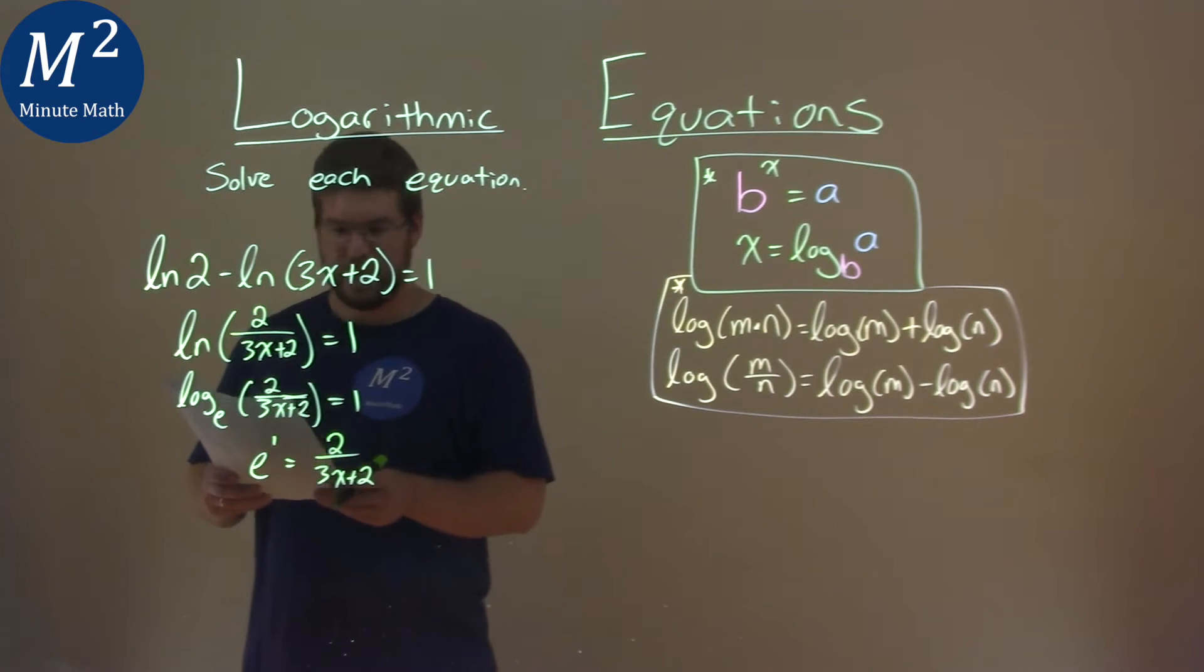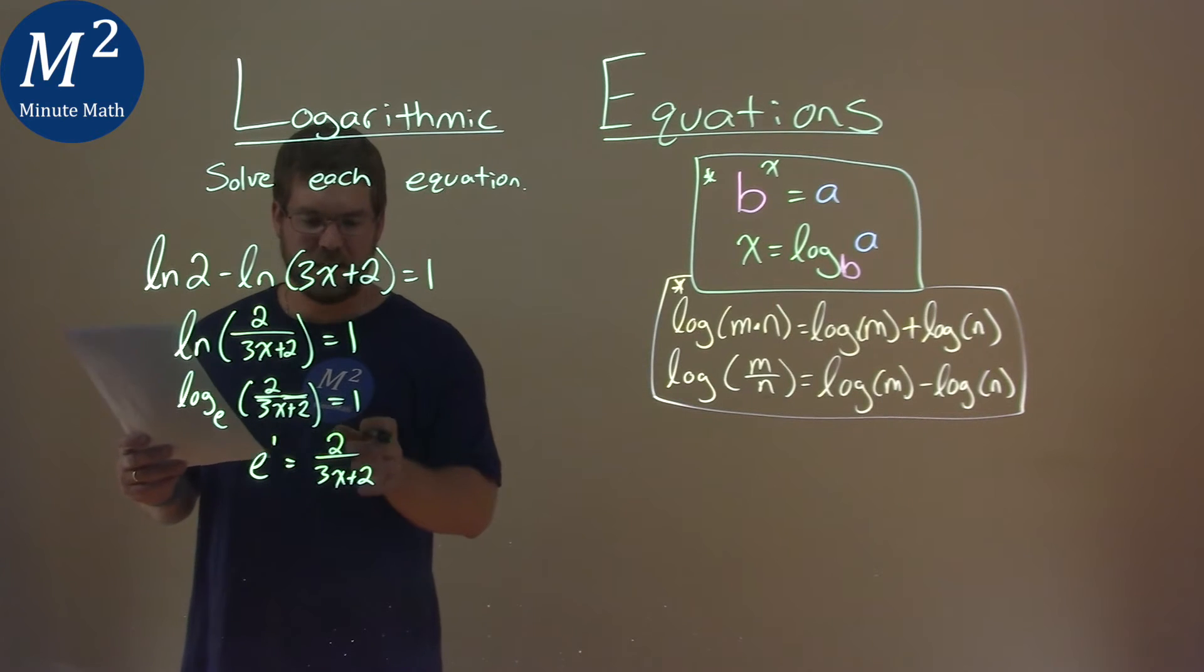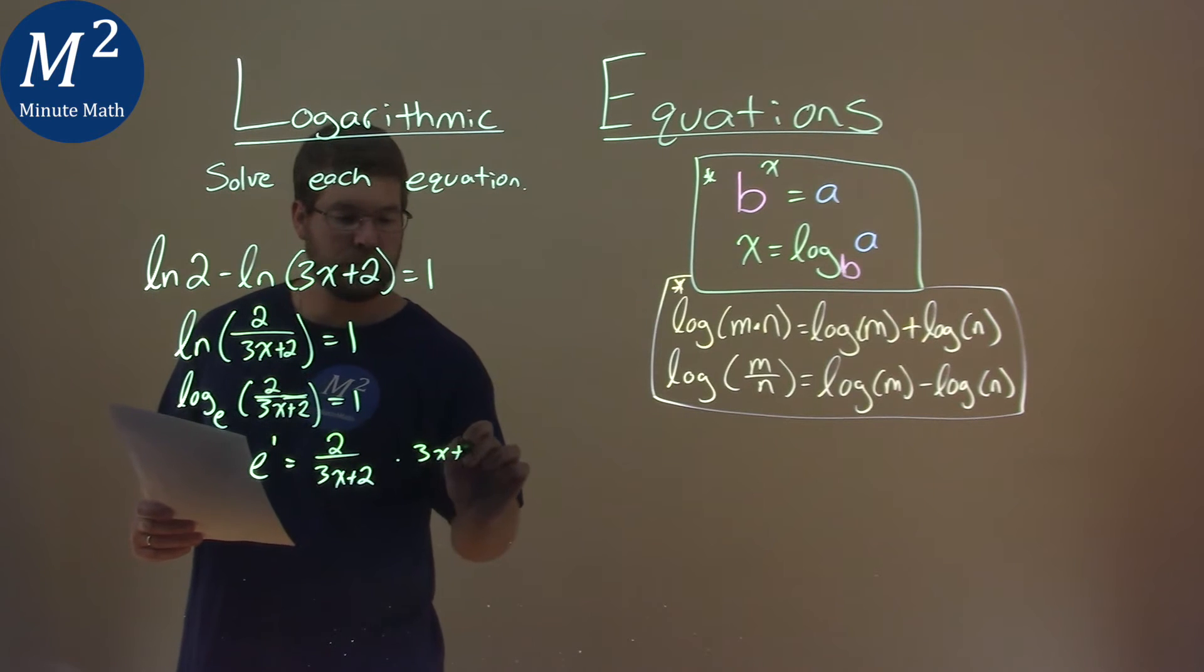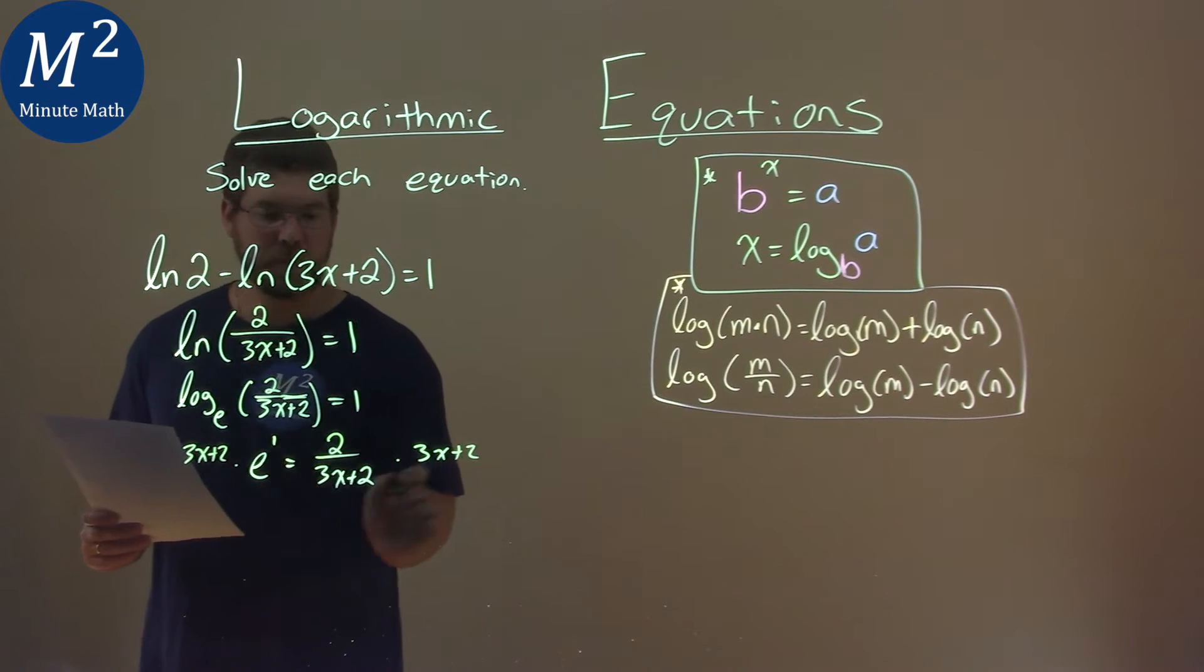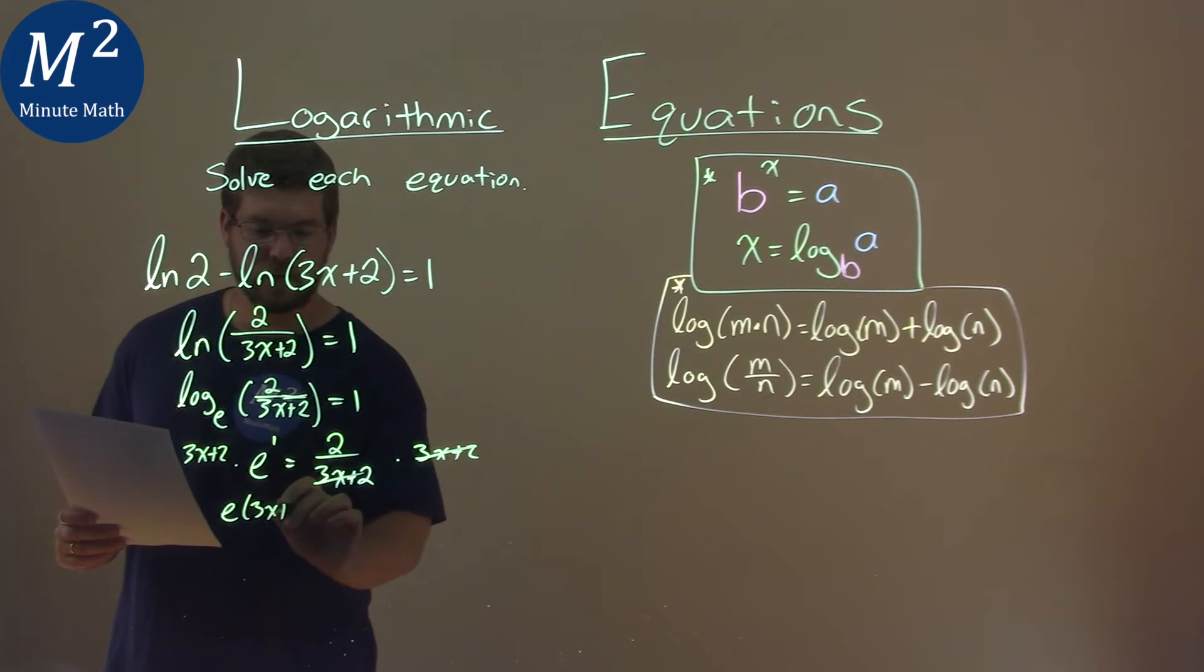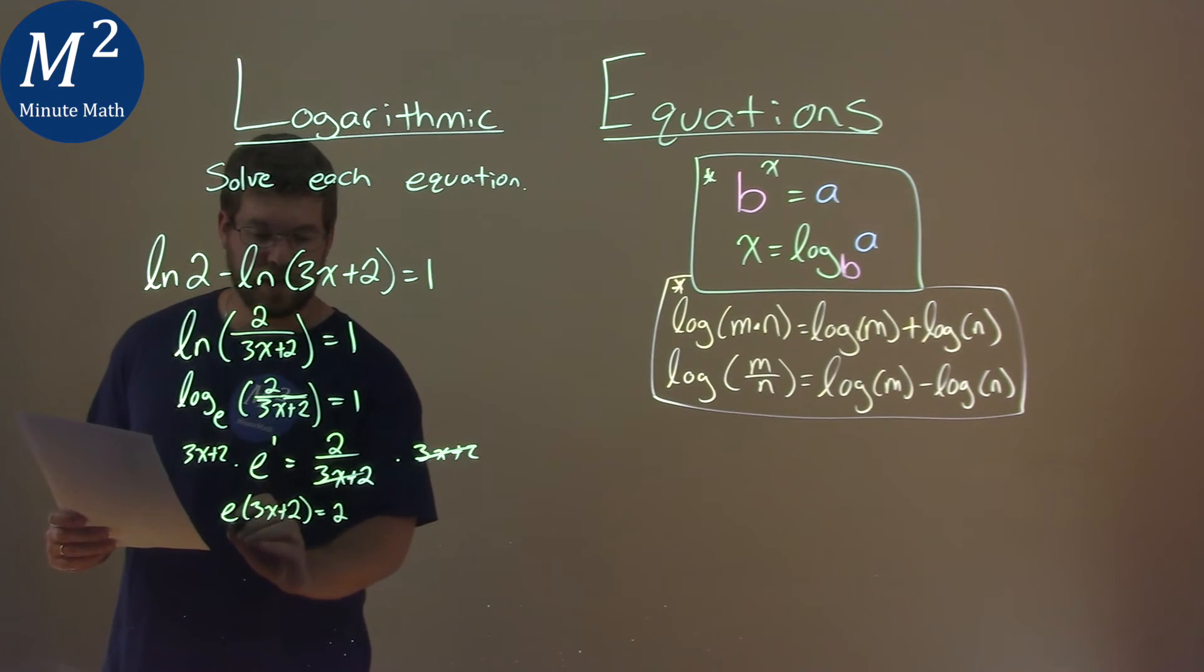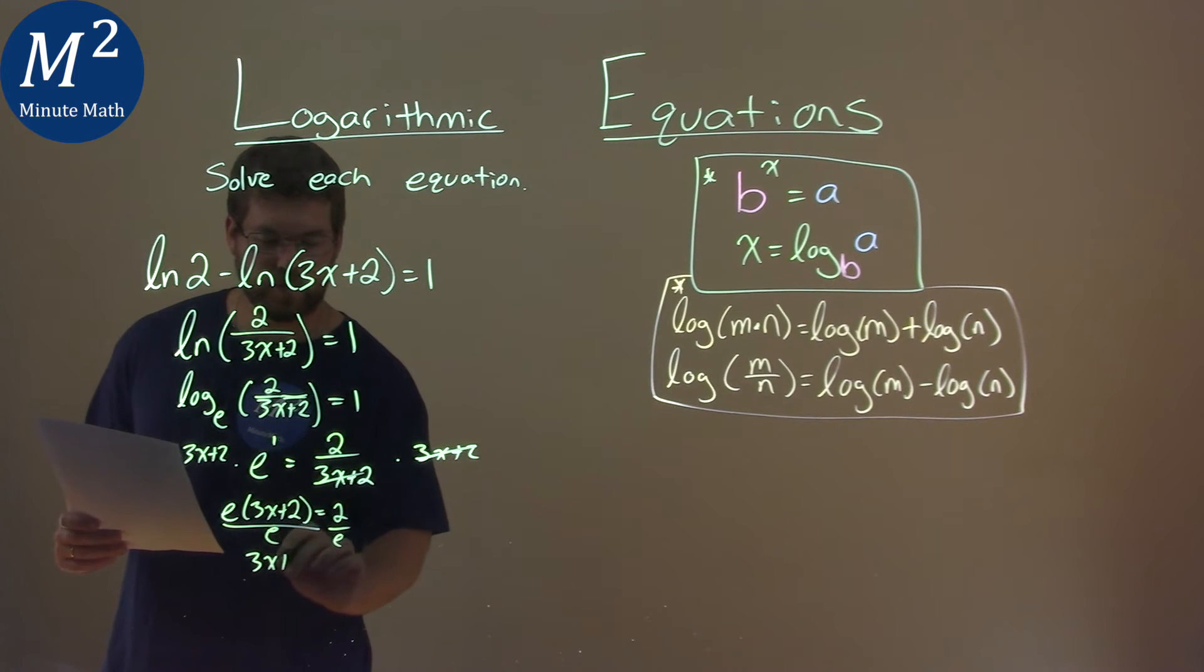From there, it's a little tricky. We want to get x by itself. So what I'm going to do here, I'm going to multiply the 3x plus 2 to both sides like so. That cancels and we're left with e times 3x plus 2 and that's equal to 2. I'm going to divide both sides by e and 3x plus 2 equals 2 over e.